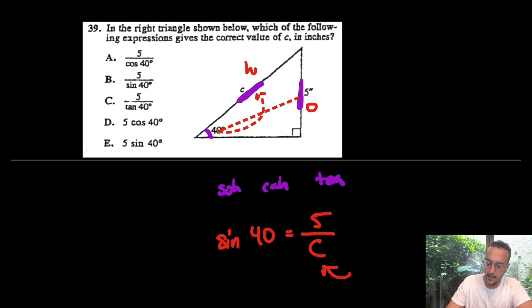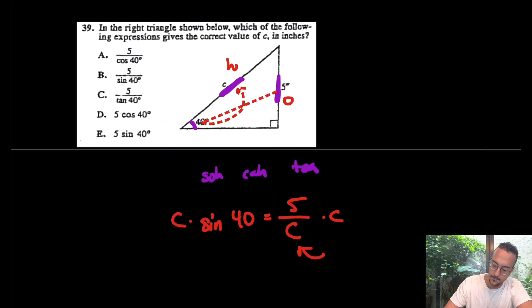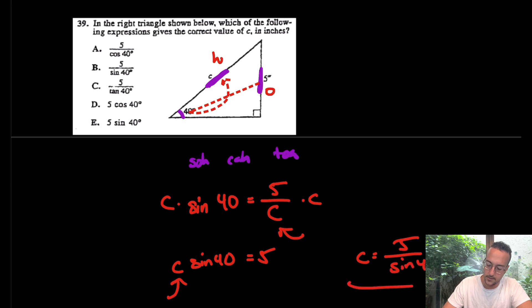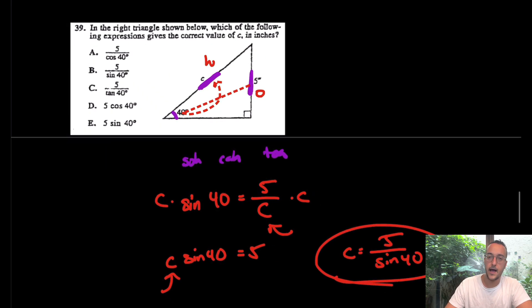From there, you want to get that C alone, and I hate fractions. How can I get out of this divided by C right here? Again, how do I get out of divided by C? I multiply both sides by C. I end up with C sine 40 equals 5, and you just have one last step here. Get the C alone. We have C equals 5 over sine 40. And that is it for this question. Which answer choice is that? I think we're going to have B. That's kind of a slippery one. Be really, really careful with questions like this. Do not miss them just because they're so easy once you get them.